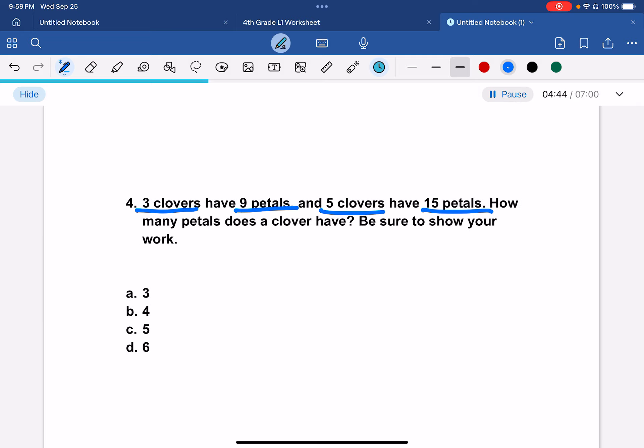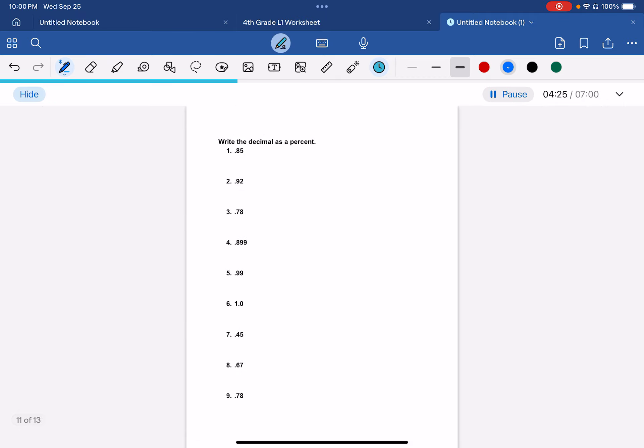3 clovers have 9 petals. 5 clovers have 15 petals. How many petals does a clover have? Okay, well, we can do 15 divided by 5 and 9 divided by 3, which would give us 3 for both. So a clover would have 3 petals.